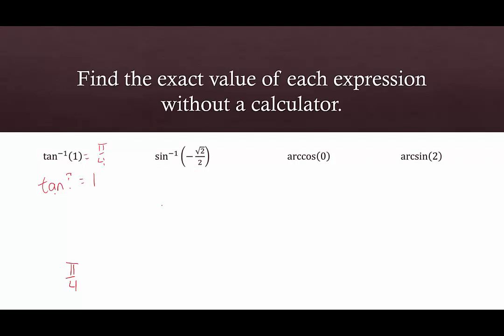And sine inverse of negative root 2 over 2. We're going to start with the reference angle: sine of what is equal to root 2 over 2? The reference angle is pi over 4. Now we take into account that the allowable range for arcsine is from negative pi over 2 to pi over 2. From 0 to pi over 2 is quadrant 1 where sine is positive; from negative pi over 2 to 0 is quadrant 4 where sine is negative. So because we're going clockwise, the reference angle is pi over 4 but the value is negative pi over 4. So sine inverse of negative root 2 over 2 equals negative pi over 4.